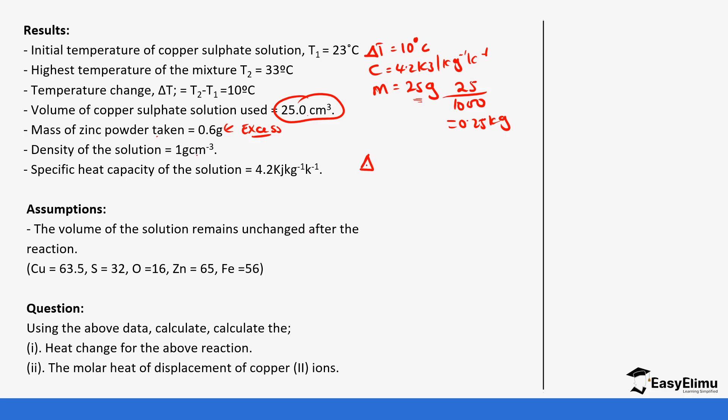So if you want to calculate the heat change that occurs, it's going to be specific heat capacity times mass of solution times temperature change, which is going to be 4.2 times mass, which is 0.025 kilograms times 10. Remember we said we do not convert because if you convert individually, it's still going to be in kilojoules. So this gives us 10.5 kilojoules.